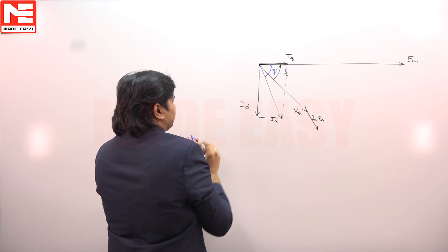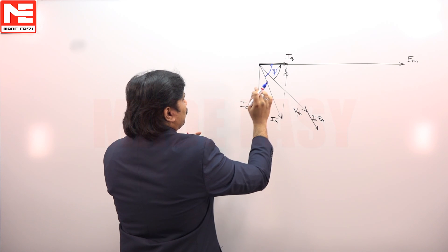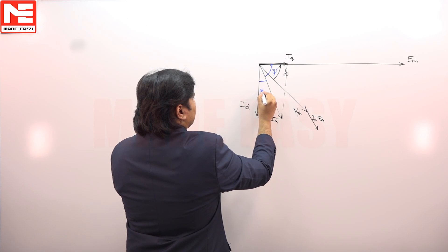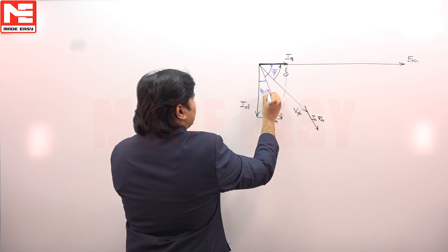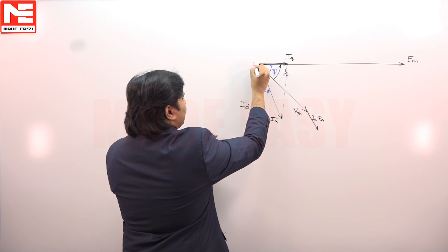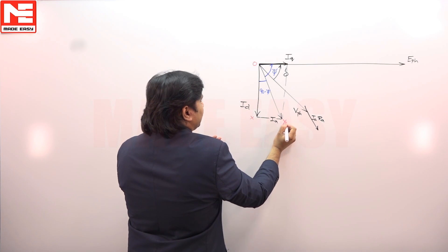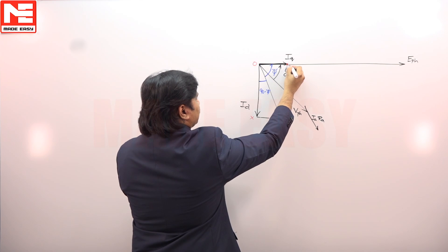Angle between V and delta. So, obviously, this is 90, this is psi, and this will be 90 minus psi. Let this be a triangle O, X, Y, Z.